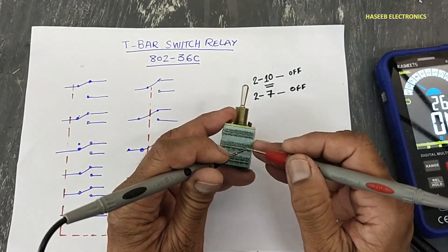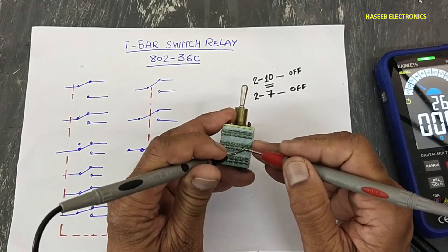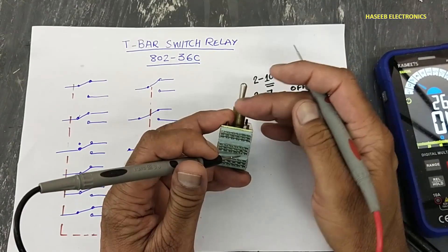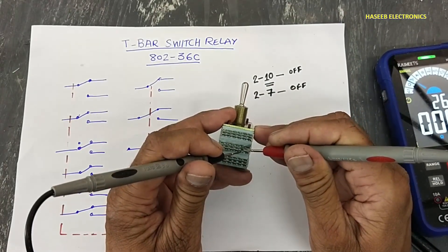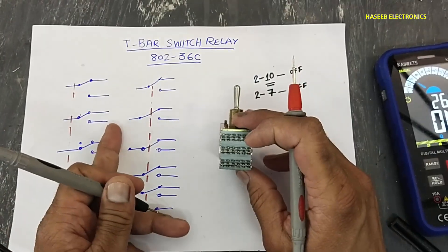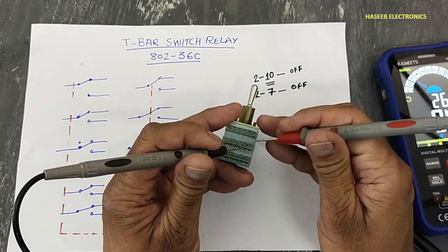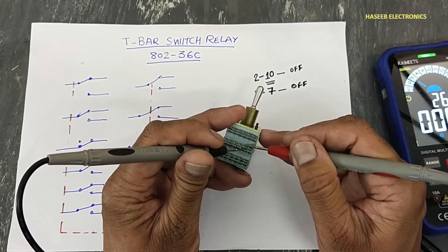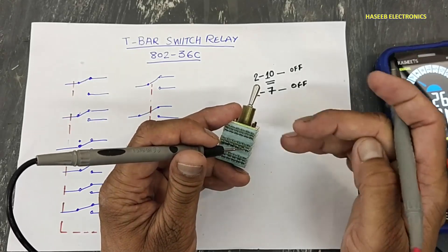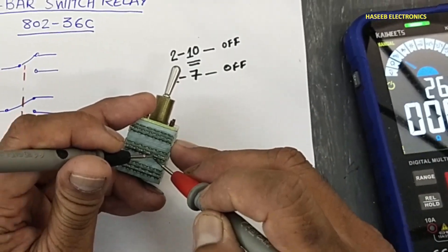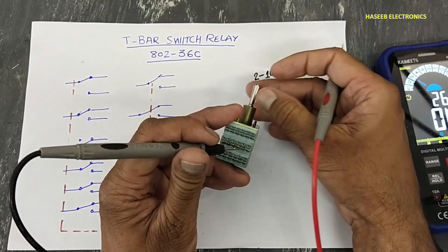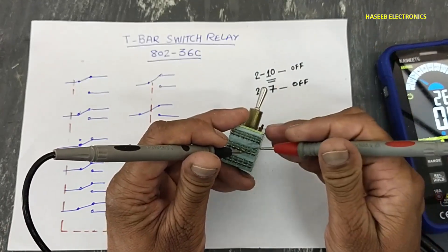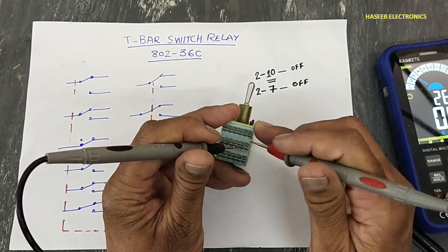In the ON condition, contact number 8 is making connection here, but it is not opening from the normally closed points. It is making connection here and here — so its common and normally closed points are melted together. It is operating at the same time. When it is in OFF condition it is working here correctly, but the normally open side is open. But when we turn it ON, it is making connection here and here — this is bad behavior.